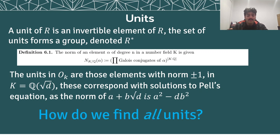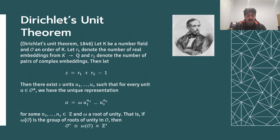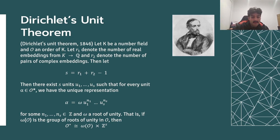But how do we find all units? That's where Dirichlet's unit theorem comes in. Dirichlet's unit theorem says that there are finitely many units which generate the unit group. That is, if r_1 is the number of real embeddings from k to Q and r_2 is the number of pairs of complex embeddings, then s equals r_1 plus r_2 minus 1.